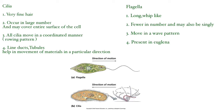Cilia occur in large numbers and may cover the entire surface of the cell. Flagella are fewer in number — they can be one, two, or three — and may also occur singly. Cilia move in a coordinated manner, that is a rowing pattern, while flagella move by undulations forming a wave pattern.